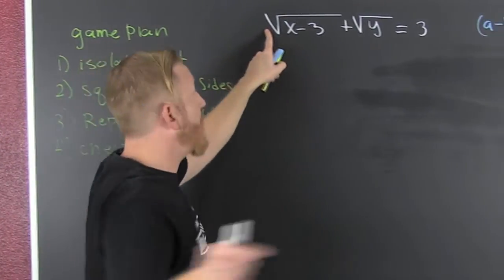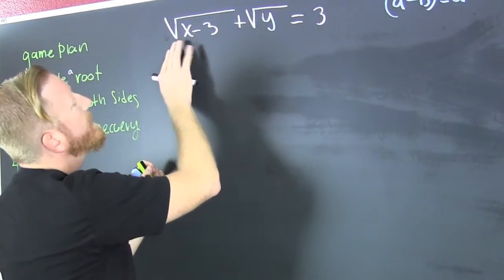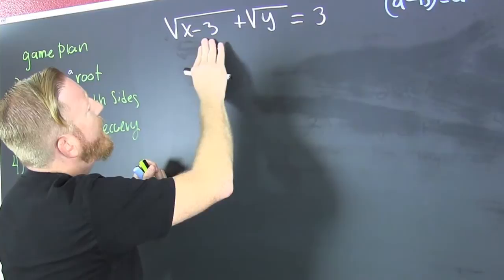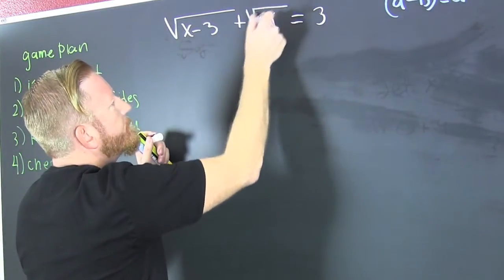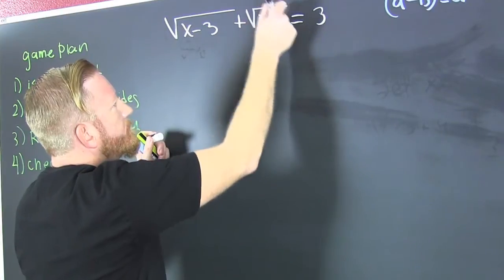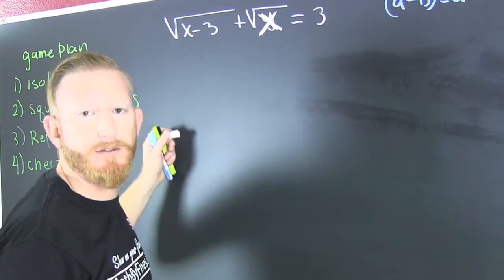Alright, fine. So I have this guy. Can you see that over there? It says the square root of x minus 3. Let's make these match. That should be an x.